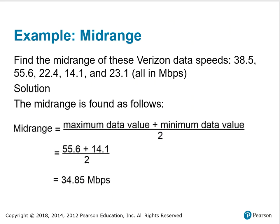Here's an example. Find the midrange of these Verizon data speeds. The midrange is the sum of the maximum and minimum data values, in this case 55.6 and 14.1. Those are added together, divided by two, and notice that we kept the accuracy to two decimal places, and that is 34.85 megabits per second for the midrange.